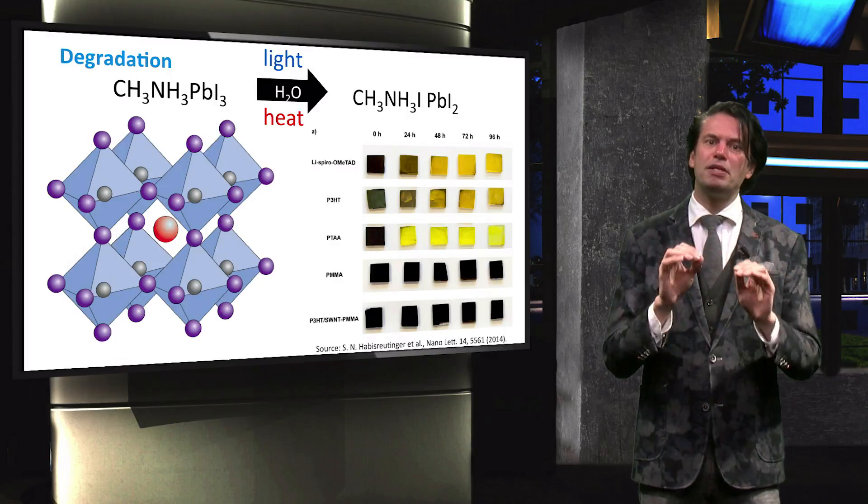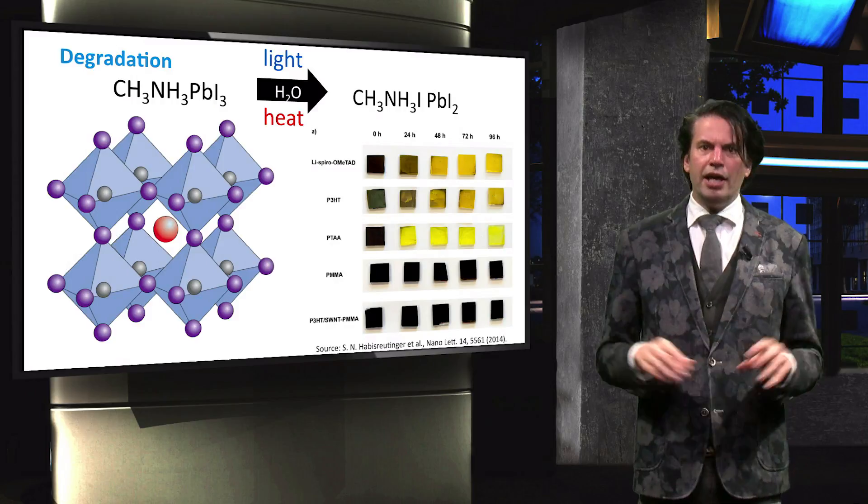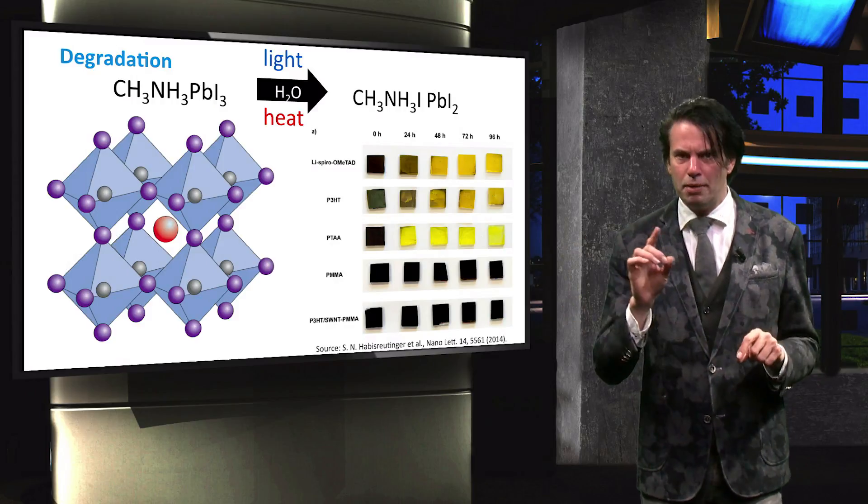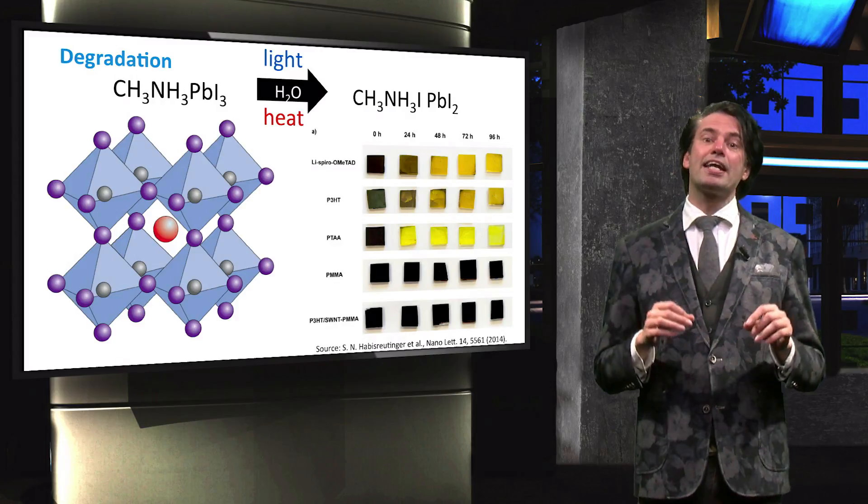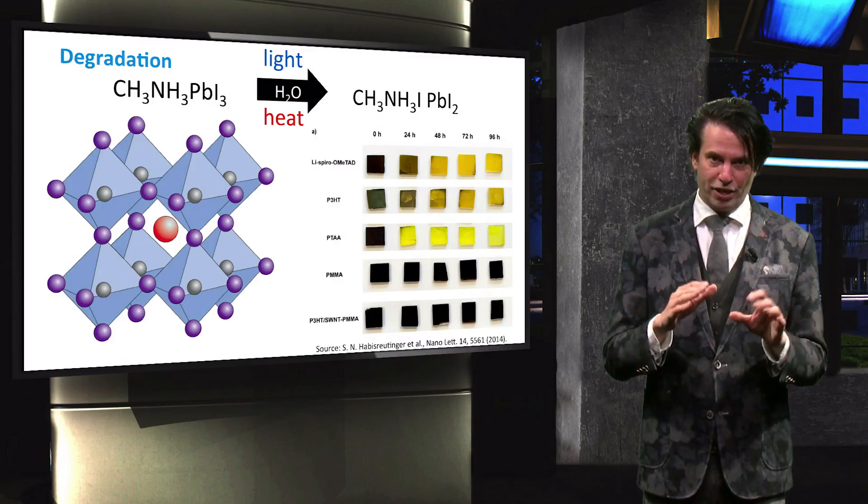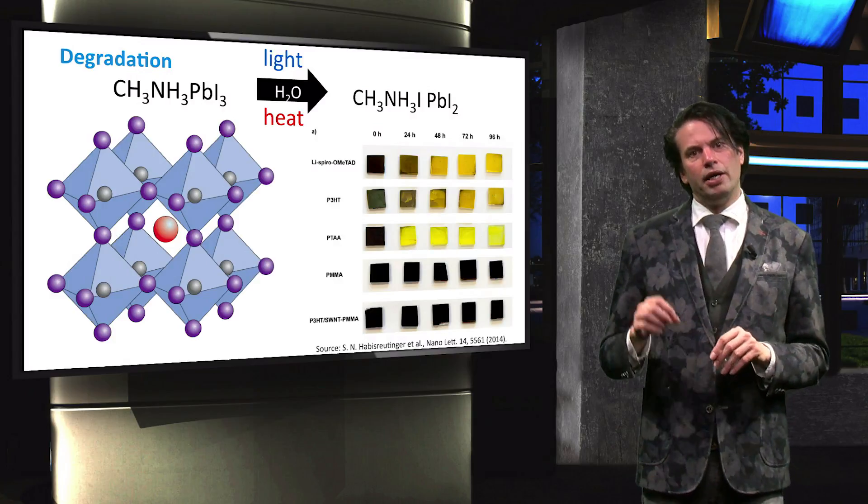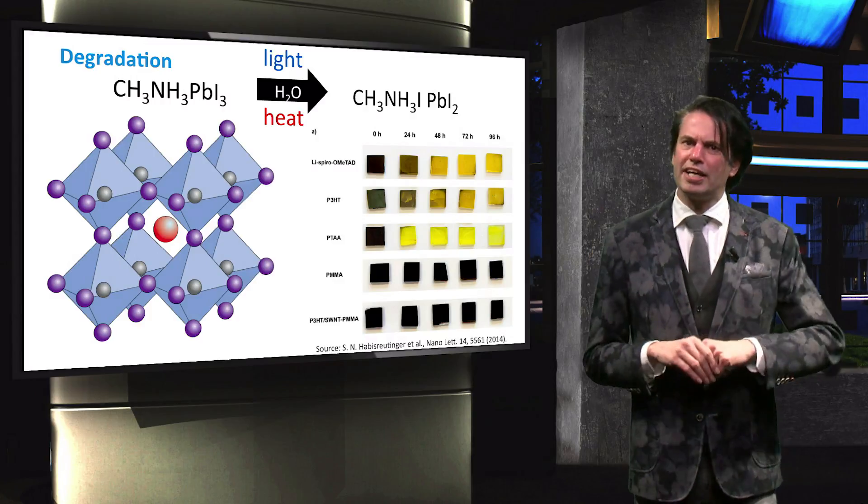Several approaches have been explored to prevent the degradation of perovskite solar cells. Here I will discuss a limited selection of these solutions. One solution is the encapsulation of the perovskite cell structure without the inclusion of any water in the cell. In the picture you can see that some structures are more resistant against water than others.